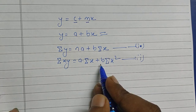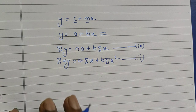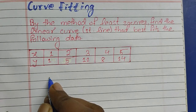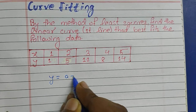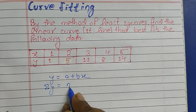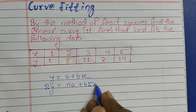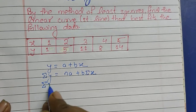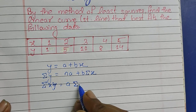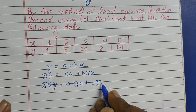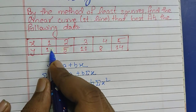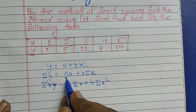Now let me show you how these two equations are used while solving the given problem. The equation of a straight line is y = a + bx. The normal equations are: summation y = na + b·(summation x), and summation xy = a·(summation x) + b·(summation x²). Here, n is the number of terms, and in this problem the number of terms is 5, so n = 5.